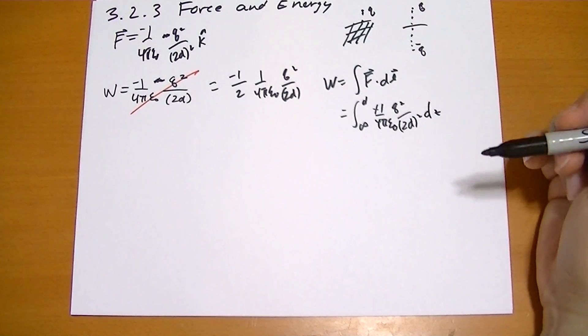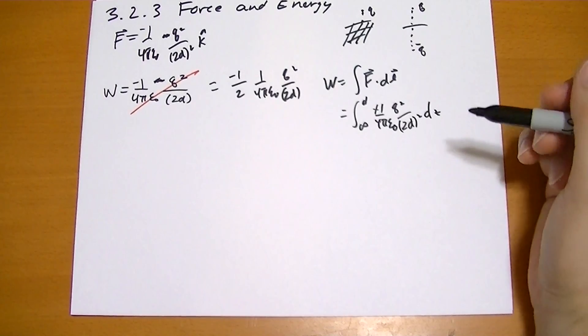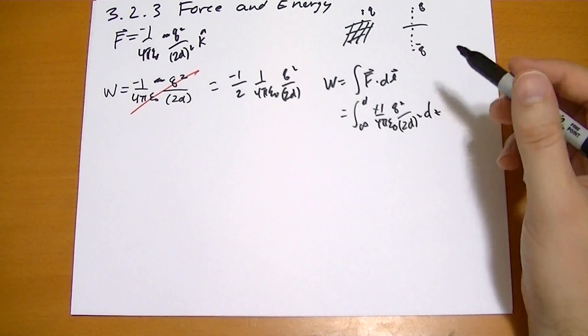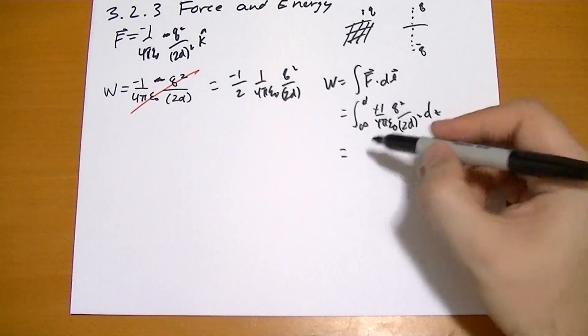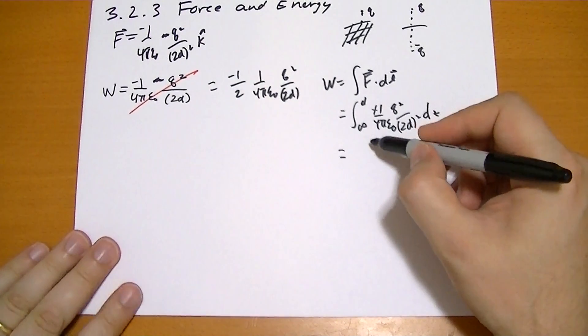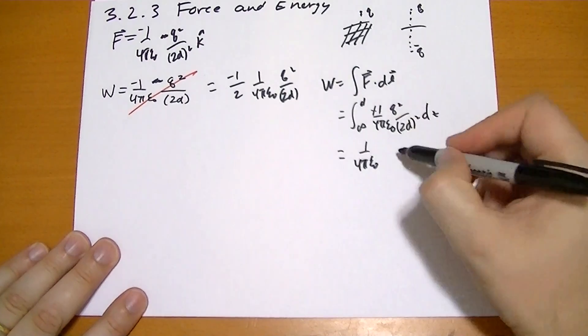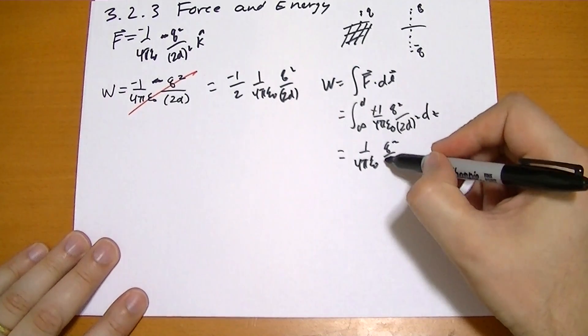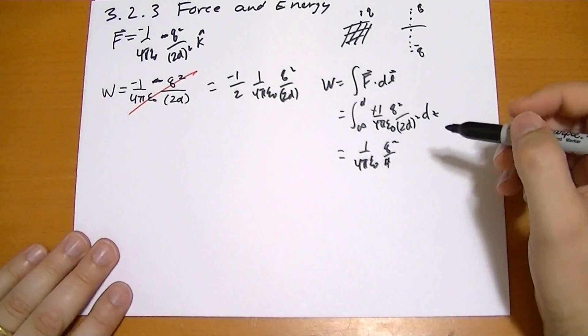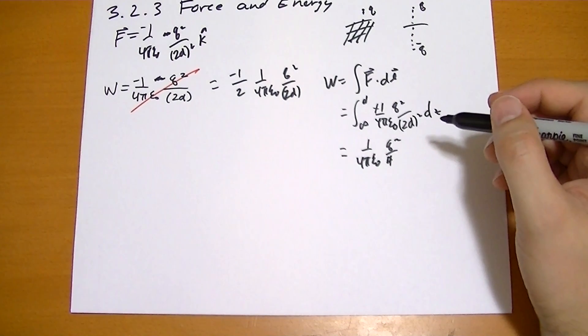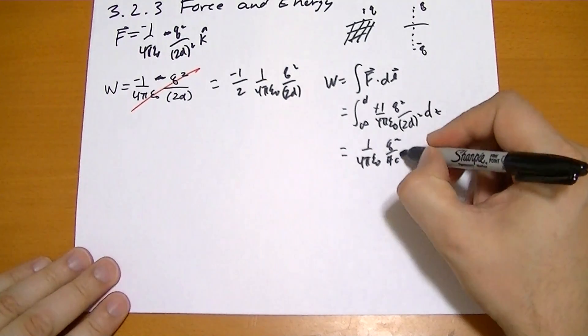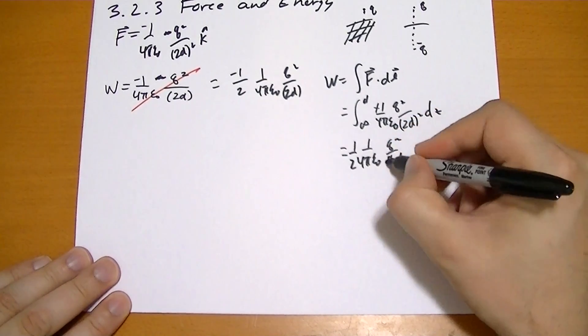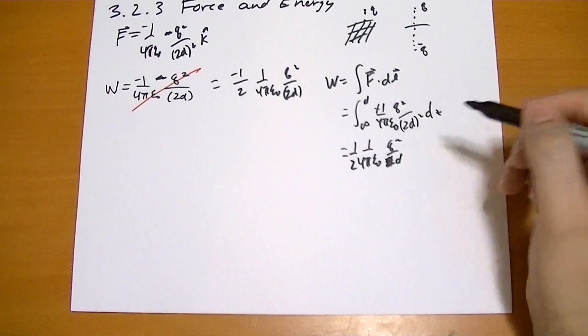We're going to start at infinity and come down directly to where it's positioned in the end. And, you know, solving for that shouldn't be any surprise that you're going to get the result, 1 over 4 pi epsilon naught, q squared over 4d, I believe. Or, if you prefer, 1 half of the potential, you know.